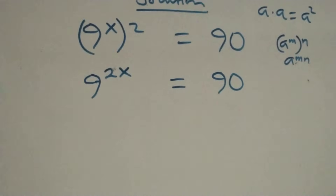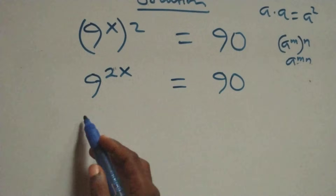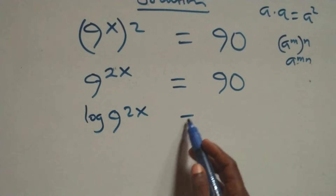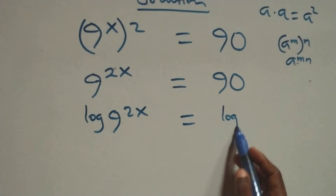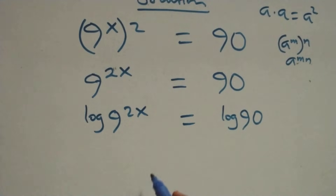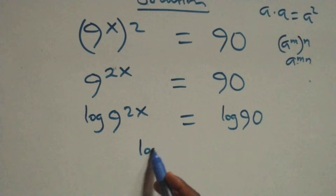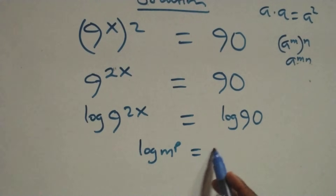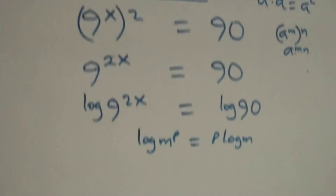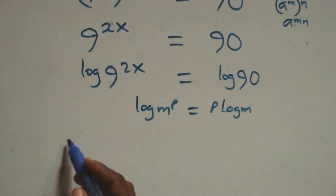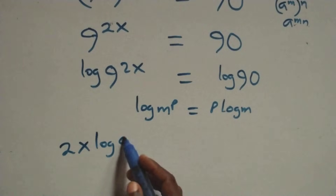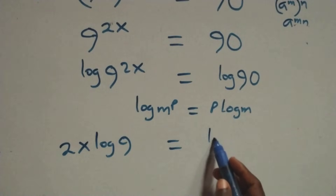The next step is to take the log on both sides. We have log of 9 raised to power 2x equals log of 90. Here we apply the power rule of logarithms: log of n raised to power p is the same as p times log n. This becomes 2x times log 9 equals log 90.